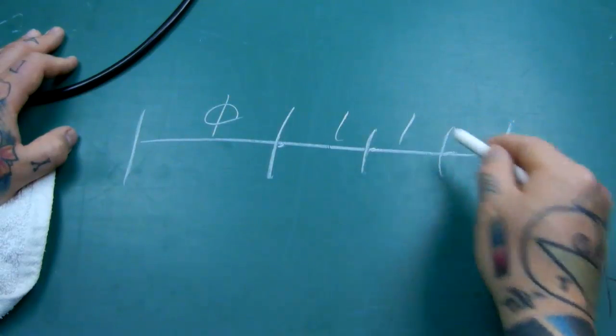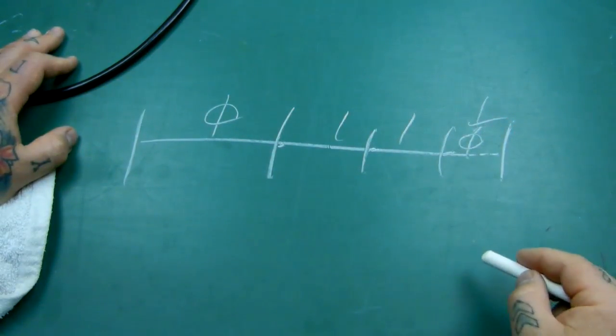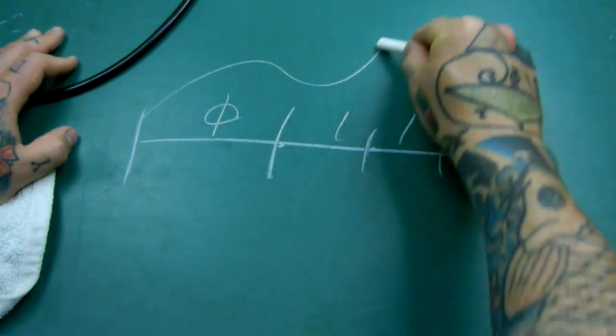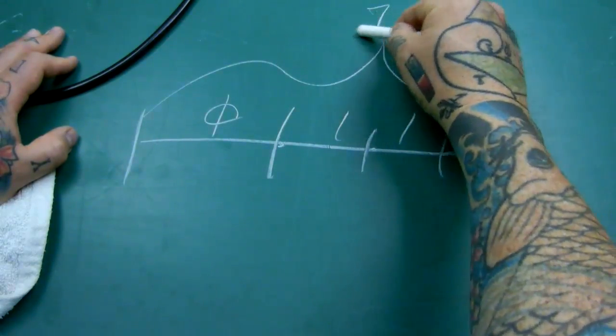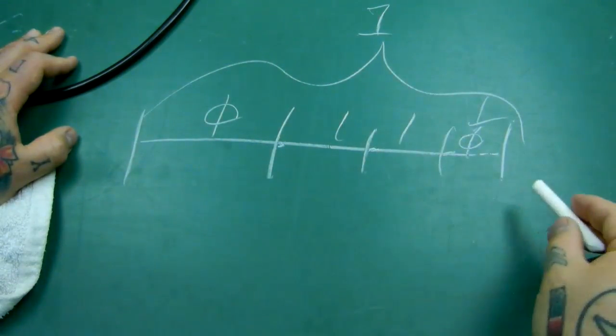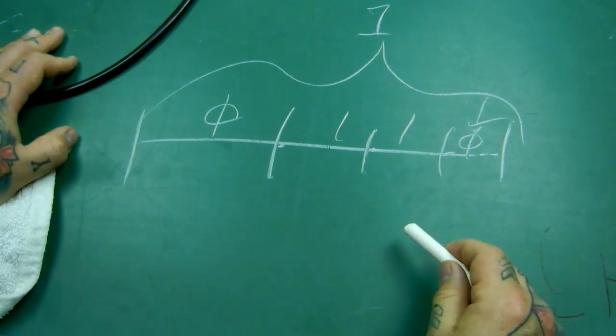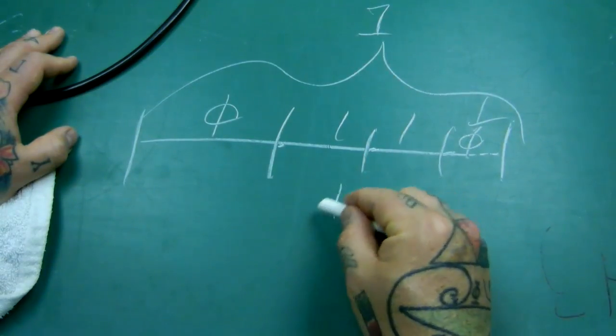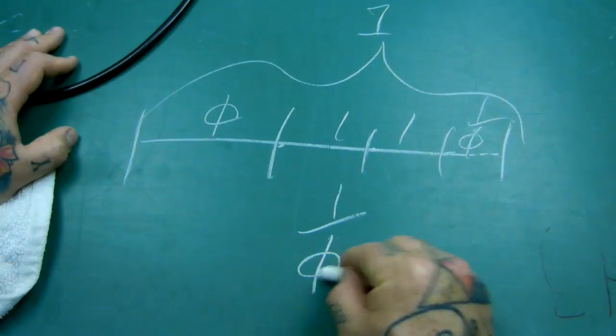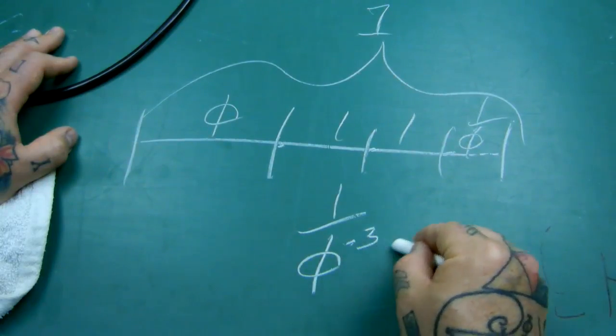What you're left with is phi, 1, 1, and 1 over phi, which is 0.618. Altogether, this is of course just one line. But the subdivision of that and everything in nature is extrapolated as 1 over phi to the power of negative 3.